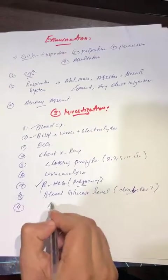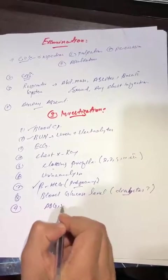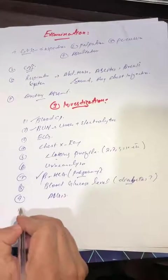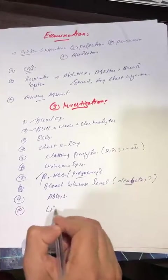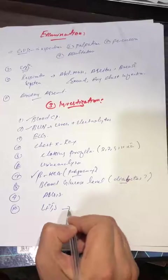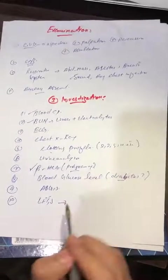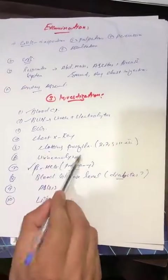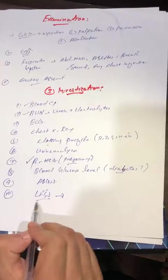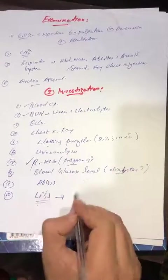Then we will do arterial blood gases—ABGs—and finally we will do LFTs, liver function test, to check for any type of deficiency of the clotting proteins or deficiency of albumins, etc.